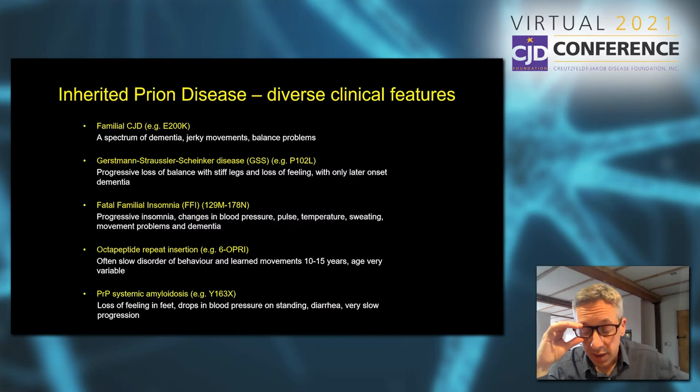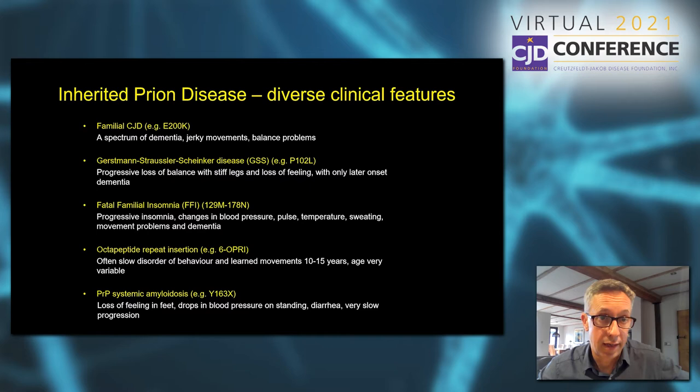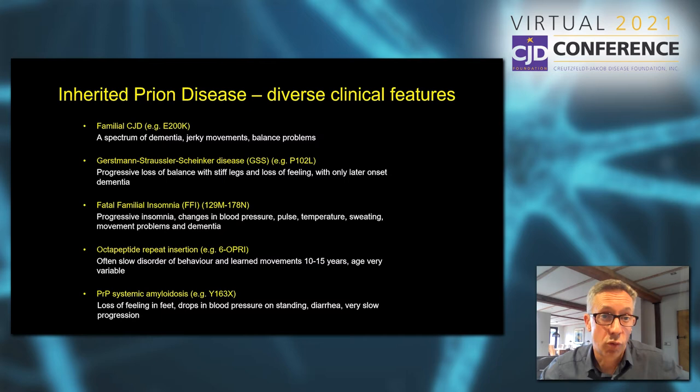The inherited prion diseases are a really diverse group of neurodegenerative disorders and there are a number of different terms used for groups of patients within the overall category. The most common worldwide is familial CJD, and patients with this disorder present with a spectrum of problems with thinking skills, jerky movements, and balance problems. The most common mutation that causes the disorder is called E200K, and this refers to a position in the gene that encodes the prion protein — the prion protein gene.